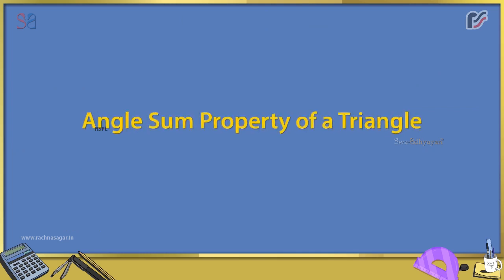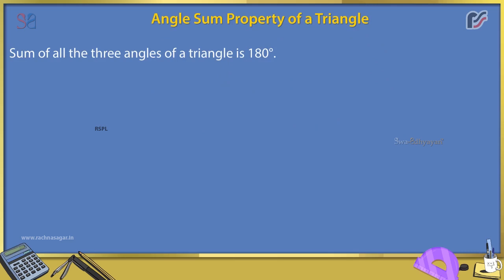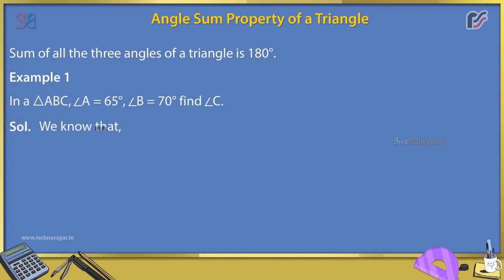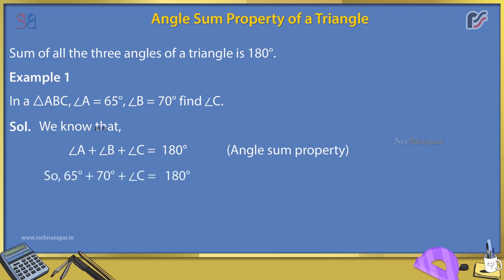Angle sum property of a triangle: the sum of all three angles of a triangle is 180°. Example 1: In triangle ABC, angle A = 65° and angle B = 70°. Find angle C. Solution: angle A + angle B + angle C = 180°. So, 65° + 70° + angle C = 180°, giving angle C = 180° − 135° = 45°.